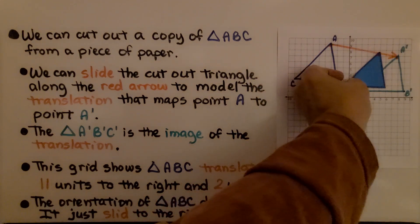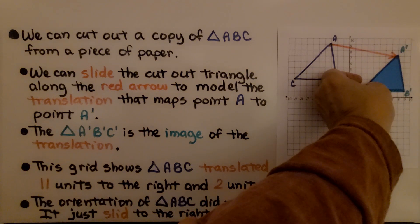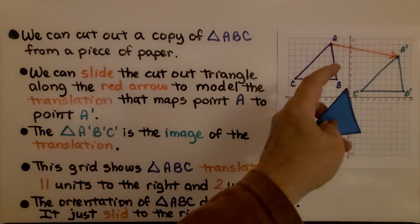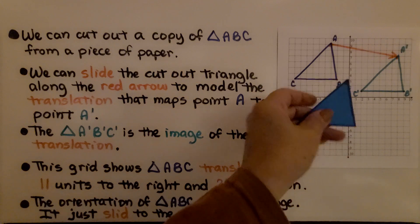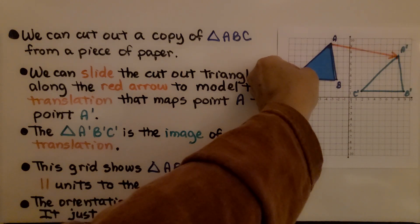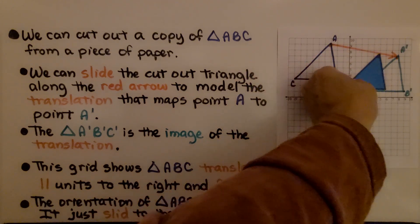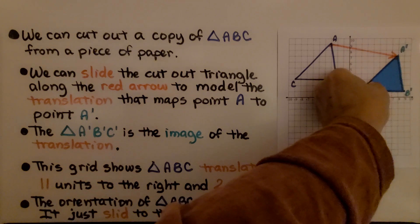If I put this here, I can slide it along so that it goes to A prime. We think of this as point A up here translating to A prime, just like that.